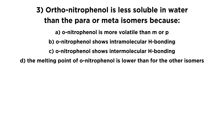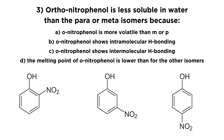For the last one, we're looking at ortho-nitrophenol and trying to understand why it is less soluble in water than the para or meta isomers. Let's draw these molecules. A phenol is a benzene ring with a hydroxyl group — a phenyl alcohol — so phenol. Nitro means we have a nitro group, so a nitrophenol is a phenol with a nitro group. This can be ortho, meta, or para, referring to the spatial arrangement of these two groups.